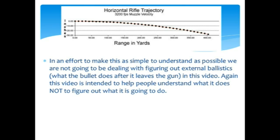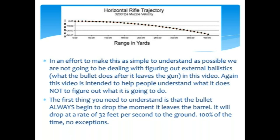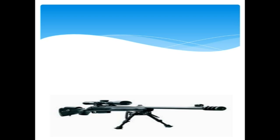Like I said, it's not intended to try and get you to understand or do the math or whatever, but the first thing you need to understand is that the bullet will always begin to drop at the moment it leaves the barrel. It will drop at a rate of 32 feet per second to the ground, 100% of the time, no exceptions. The effect of gravity on mass is at 32 feet per second it drops, no exceptions.